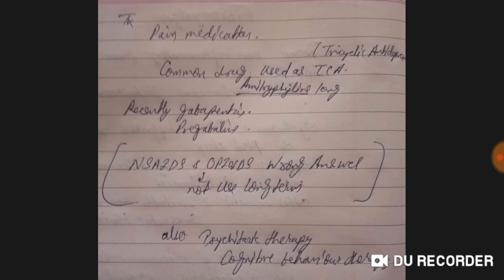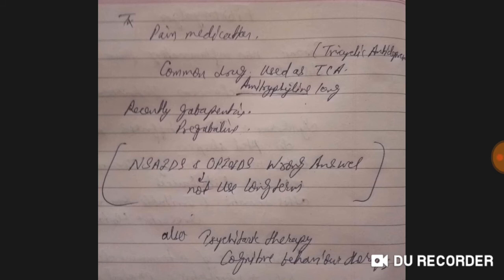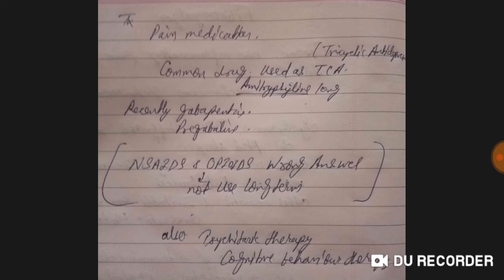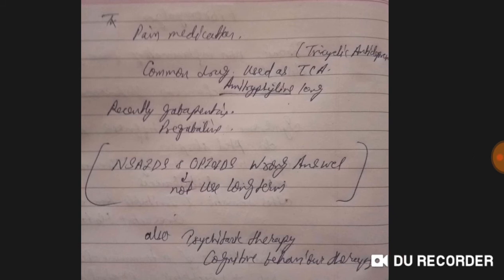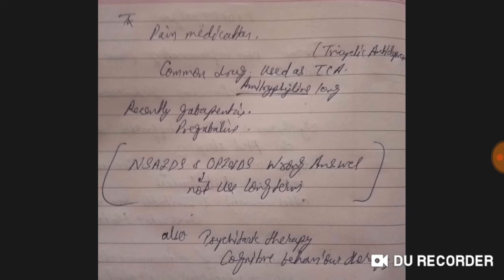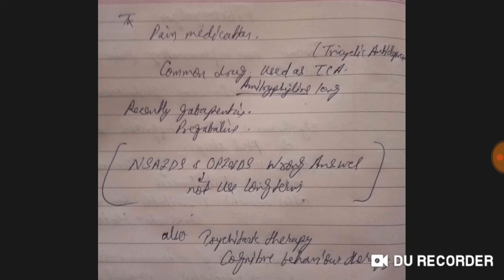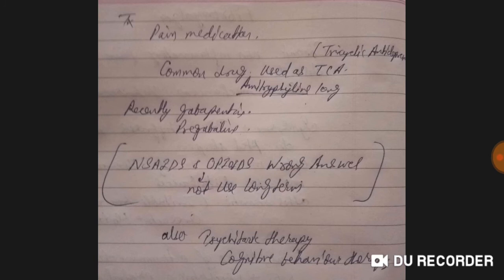For treatment, pain medications can be used, but they are not the right answer for exams. If given the option, note that tricyclic antidepressants like amitriptyline were used earlier, but nowadays we use gabapentin or pregabalin. Amitriptyline is used at 10 mg; gabapentin or pregabalin at 75 or 150 mg for long-term therapy. NSAIDs and opioids are a wrong answer — never choose them in an exam.